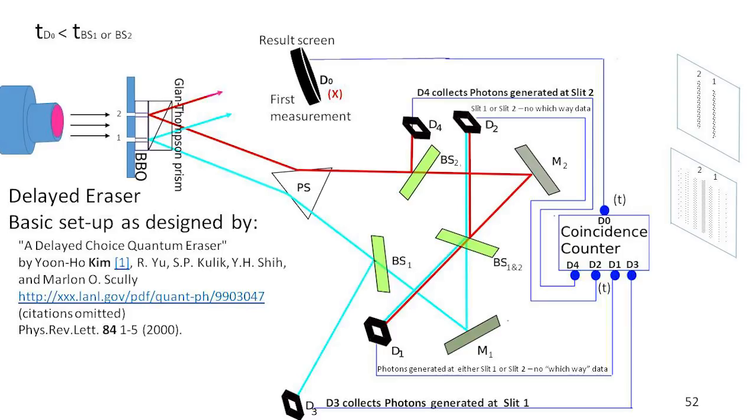So they just look at the times that these things hit these various detectors, and they can tell which one of the particles on D0 is associated with the one that was collected in D1, D2, D3, D4. All right, so that's how the basic experiments work.